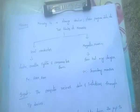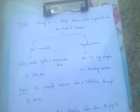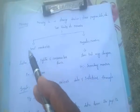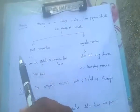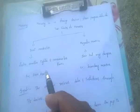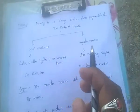Memory is a storage device — it stores programs, data, or results. There are mainly two kinds of memories: semiconductor memories and magnetic memories. Semiconductor memories are very fast, very small, and consume less power; examples are RAM and ROM. Magnetic memories are very slow but very cheap.